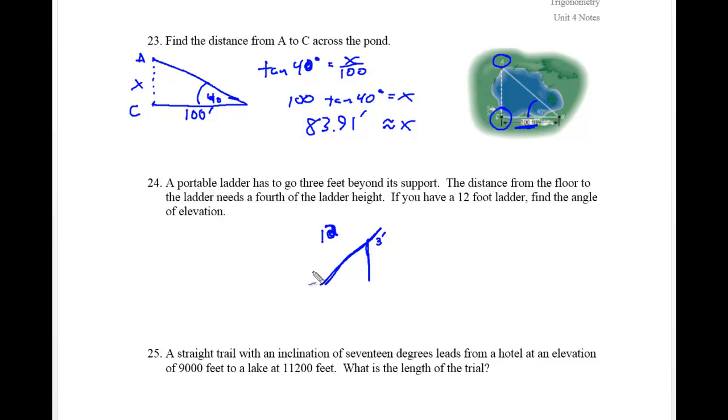So this whole distance here is 12. It says find the angle of elevation. So that means that this is going to be our angle here. We'll call this angle theta that we're trying to find. Now it says here the distance from the floor to the ladder is a fourth of the ladder height. So this here is not drawn to scale. This actually wouldn't be very far away from the wall at all.